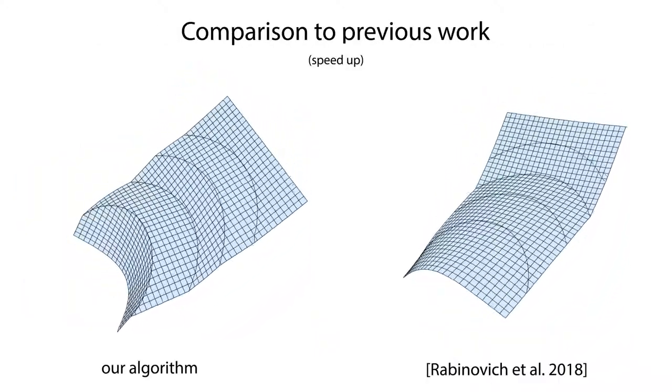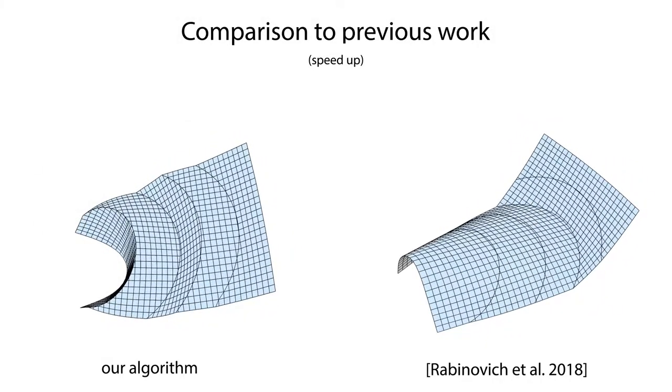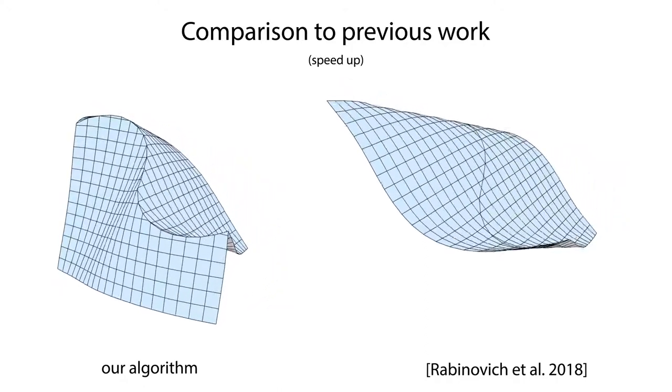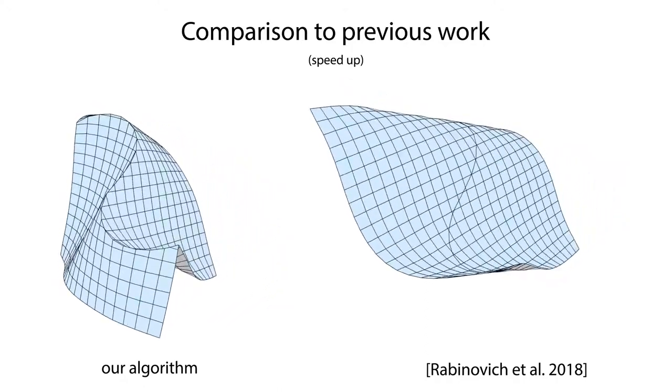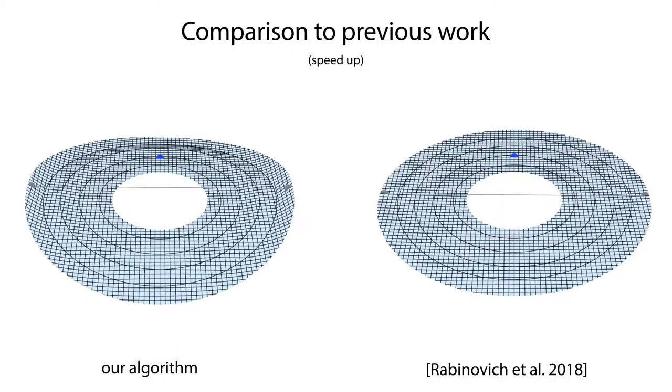In this example, we compare our algorithm with previous work by Rabinovich and colleagues using the same positional constraints. Observe how our algorithm enforces all the crease curves to fold, whereas almost no folding happens using the previous technique.